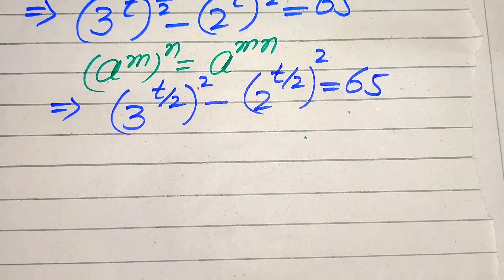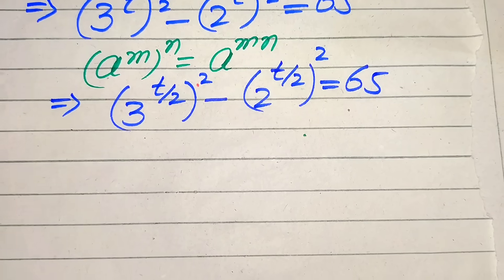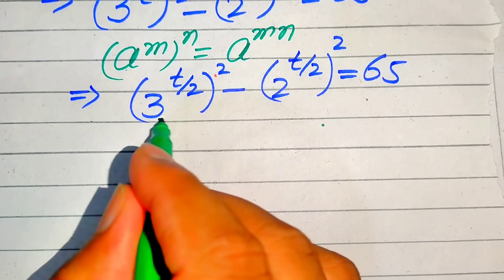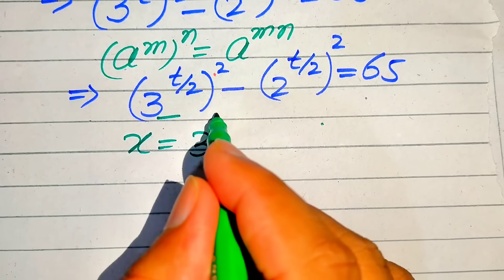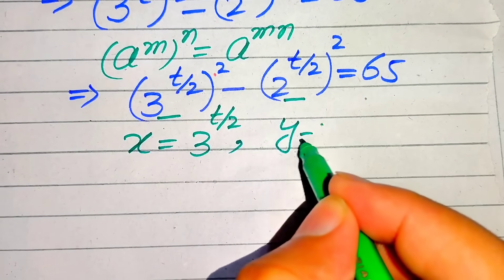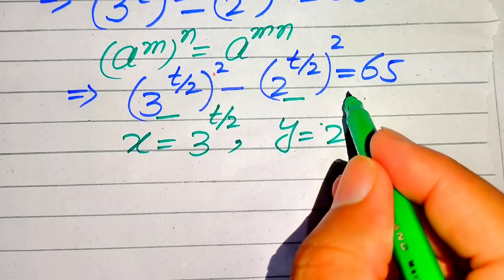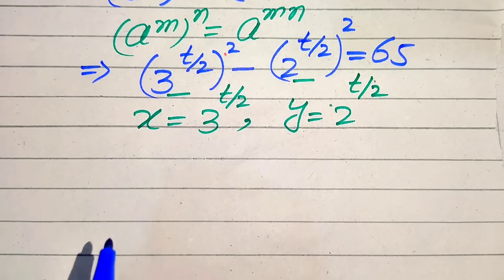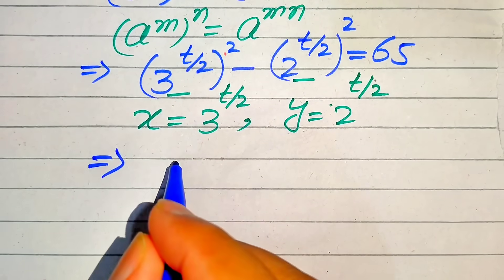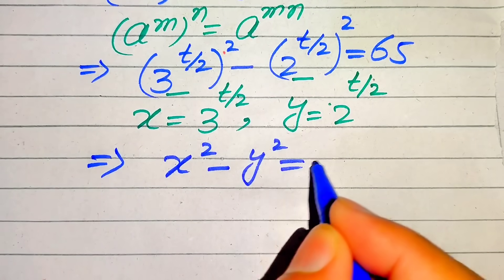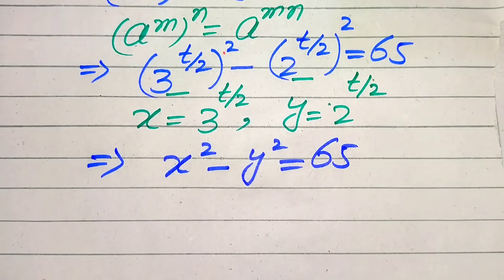In the next step we convert this exponential equation into a polynomial equation with two variables. We let x equal 3 to the power of t over 2, and y equal 2 to the power of t over 2. Substituting these into the above equation gives us x squared minus y squared equals 65.